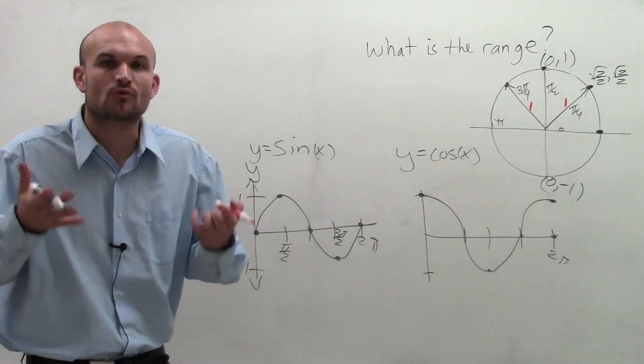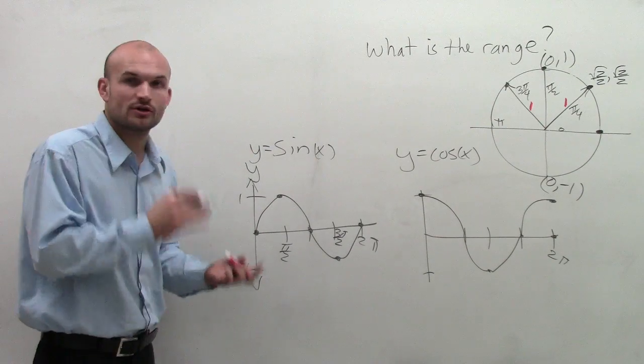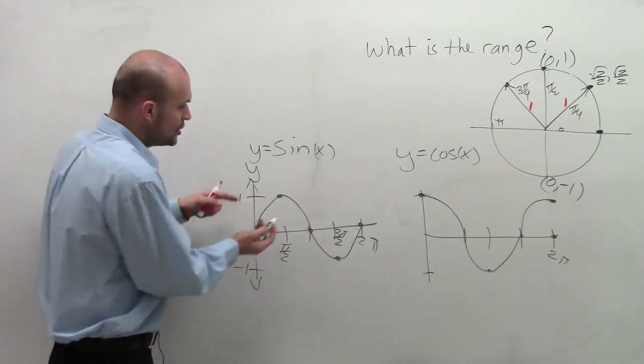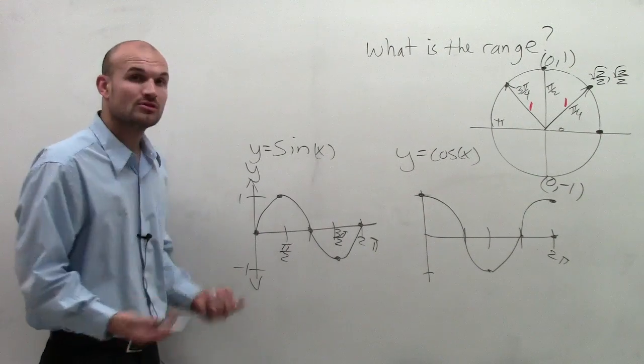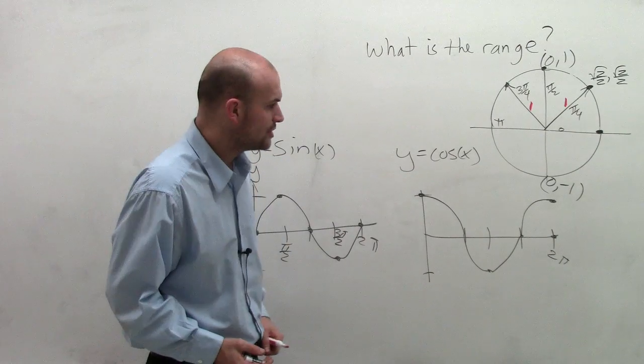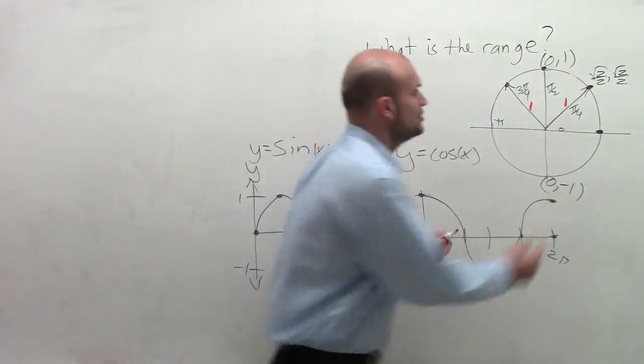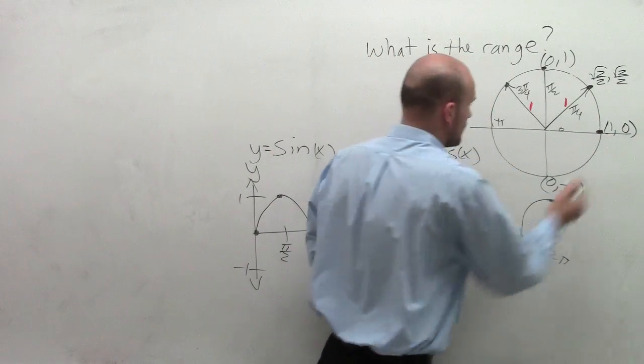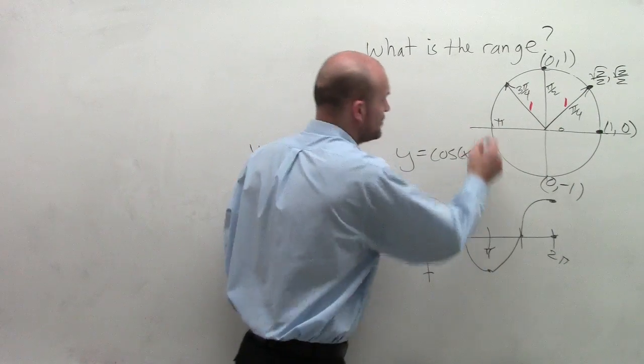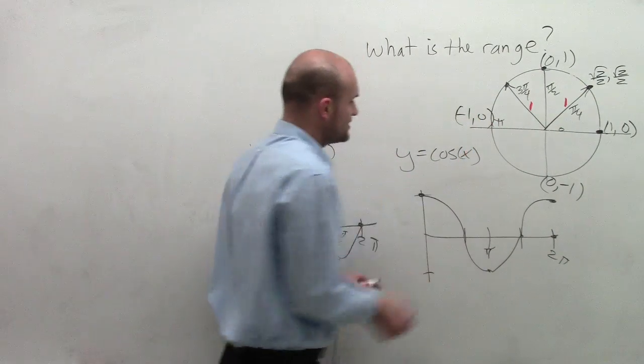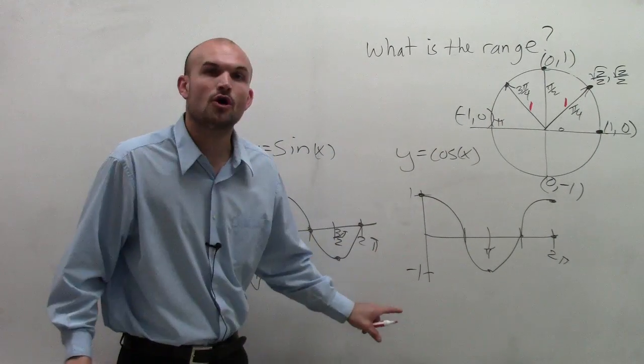When we're talking about range, we're talking about what are the output values that are going to be a part of your graph. What are the maximum and the minimum? You can notice my y values, my output values, don't go higher than 1 or lower than negative 1. And it's the same thing for the cosine function. If you evaluate cosine at 0, you have 1 comma 0. When you evaluate cosine at pi, you have negative 1 comma 0.